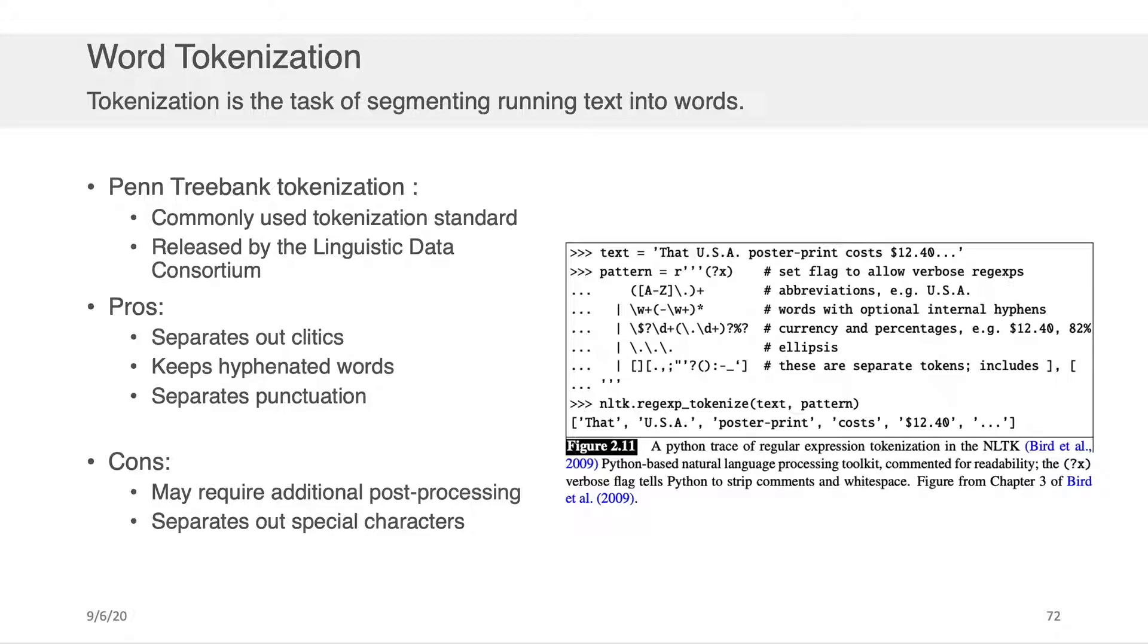It's very commonly used tokenization standard. It's put together by the Linguistic Data Consortium and many tools such as Python's NLTK, which we will be talking about in the tutorial section of this lecture, have it either implemented or make it very easy for you to implement. So I've got an example there on the right-hand side, but you can see here that for the example text of that USA poster-print costs $12.40.